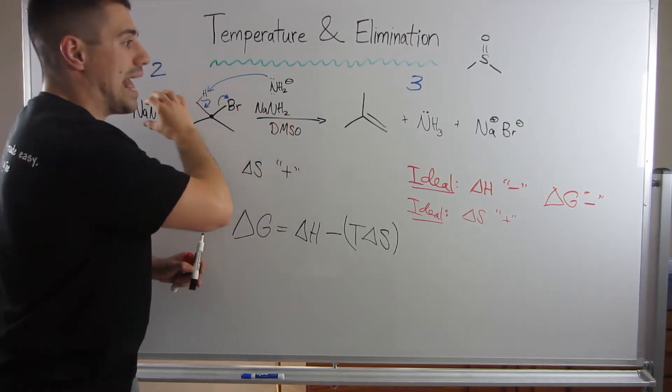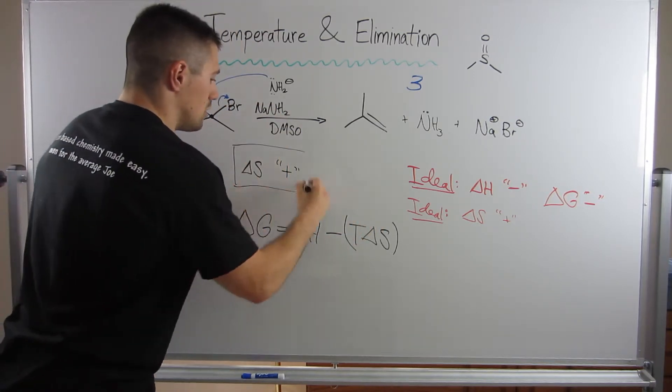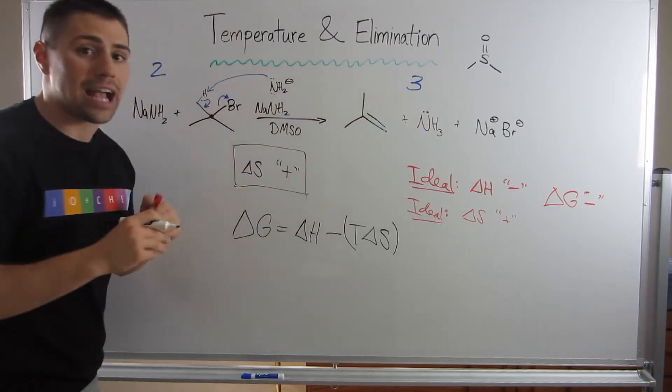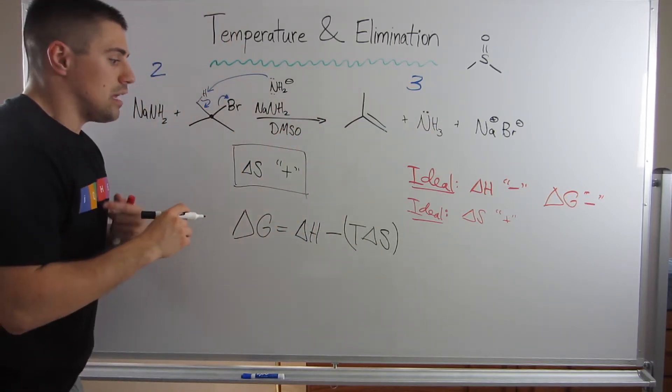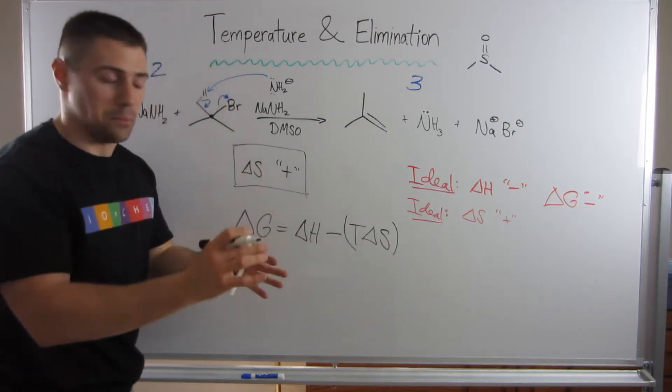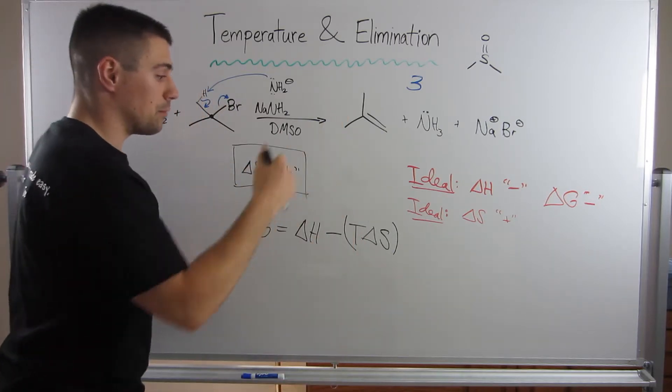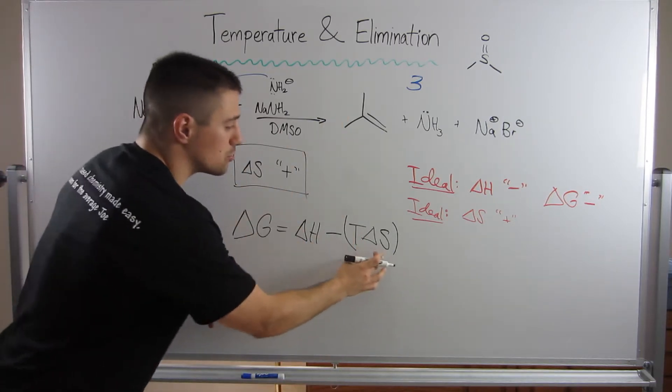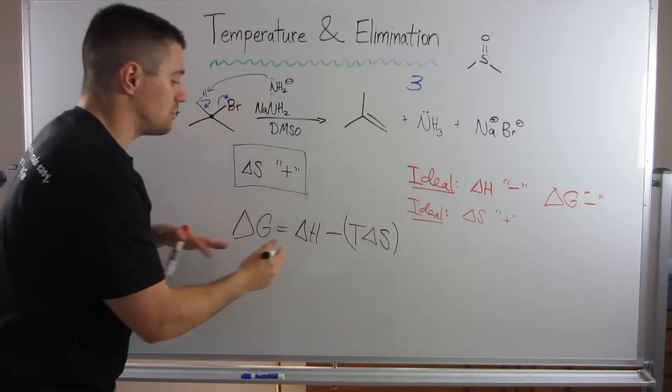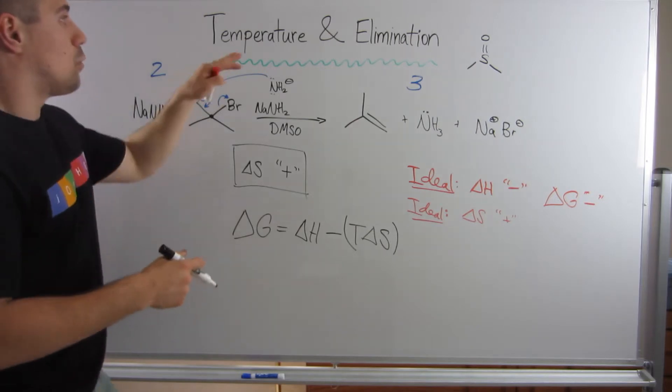Since we see in elimination reactions that entropy is guaranteed to be positive due to the fact that we produce an extra molecule in the reaction, we have more disorder. We can make Delta G more negative. Whatever Delta S is going to be, it's going to be. But if we make temperature a big number, then this term grows larger positively, which means we're subtracting off a bigger positive number and Delta G continues to grow negative.